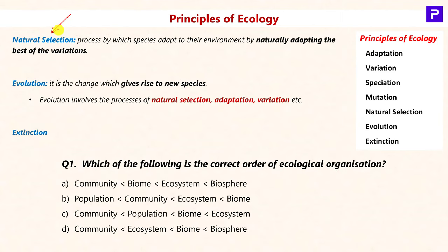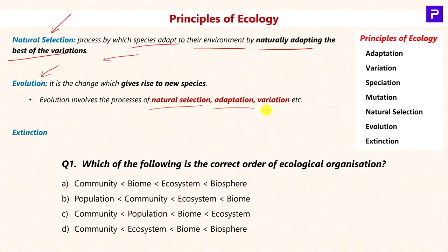The next important process is natural selection — synonymous with 'survival of the fittest.' It is a process in which species adapt to their environment by naturally adopting the best of the available variations. A species may give rise to various subspecies or variations, each differing in genetic makeup; the variation best suited to a particular environment or ecological niche has the highest chance of survival. Evolution is the process which brings about speciation, occurring due to change in heritable characteristics across generations, and it involves natural selection, adaptation, variation, mutation, and other related processes.